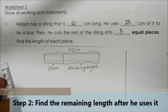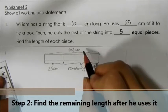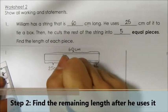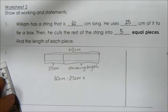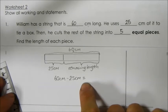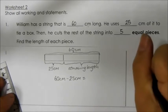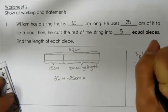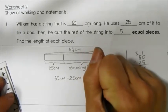Now, we can find the remaining length of the string by subtracting 25cm from the 60cm. Taking note that we need to write our units. From here, we need to do our working to show what the answer is. So, the remaining length of the string is 35cm long.